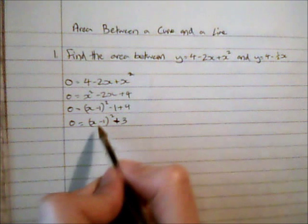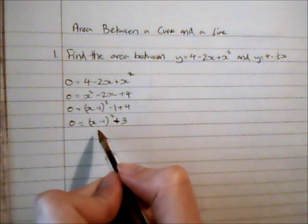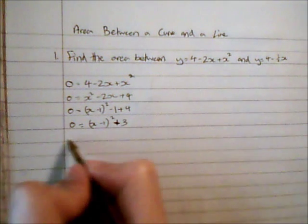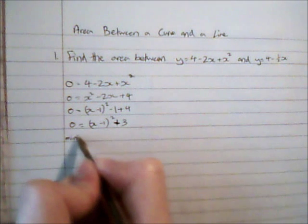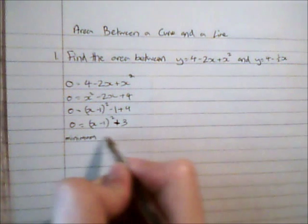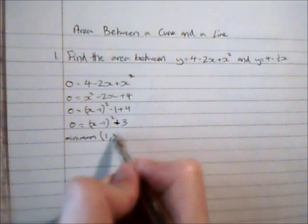However completing the square is quite useful because it gives me an idea about where the minimum point is. So the minimum is going to occur at 1, 3.